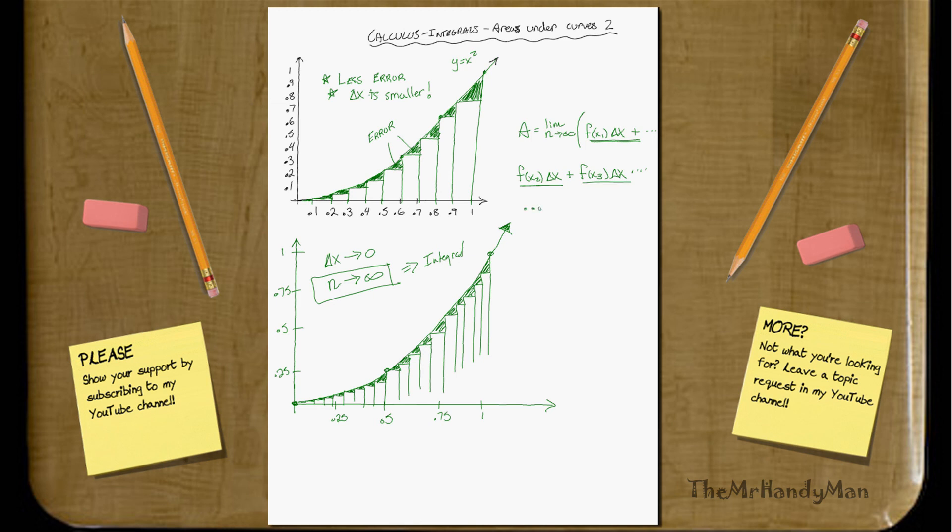Let me just go dot, dot, dot, f of x to the n delta x. And that just says, if you have a hundred increments, if you have a hundred segments, then that would be f(x) to the hundredth. And that just means the hundredth one. That's all that's saying.